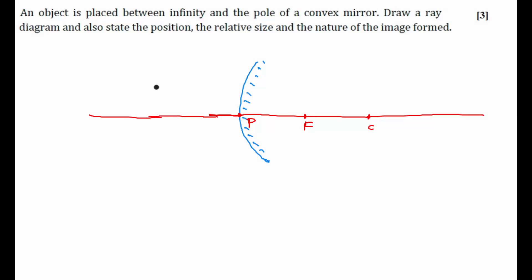So we need to place an object between pole and infinity, infinity on this side. So somewhere here, anywhere between pole and infinity when you place an object, let's observe what is the nature of the image form. Now to trace an image here, we need to consider two rays.